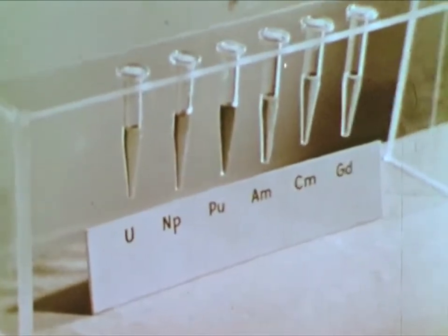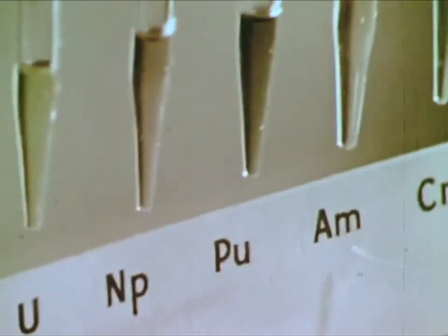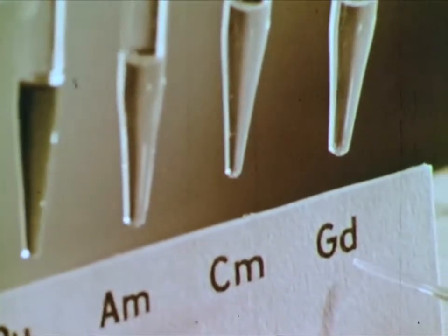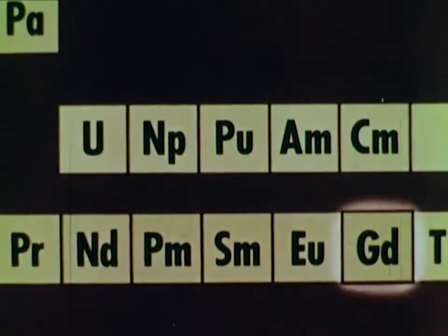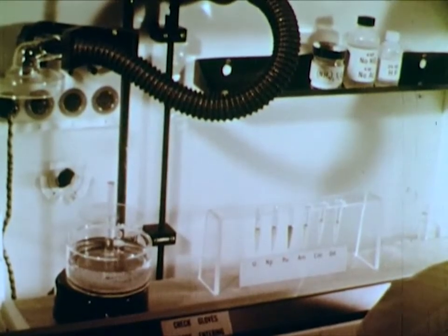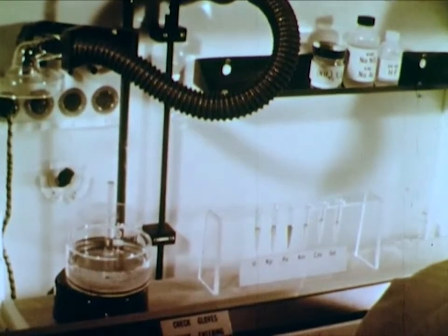Here are ionic solutions of the nitrates of uranium, neptunium, plutonium, americium, and curium. And here is a solution of gadolinium nitrate. Gadolinium is one of the lanthanide, or rare earth elements. As you know, the transuranium elements are radioactive. The particular isotopes that we are using emit helium ions called alpha particles. However, since alpha particles can be stopped by ordinary glass, we can perform our experiments safely in a glove box.